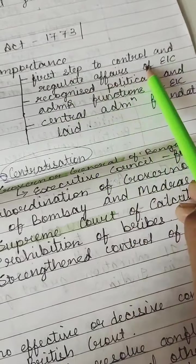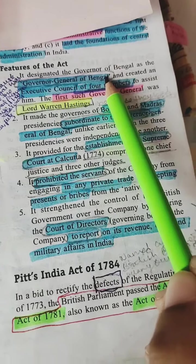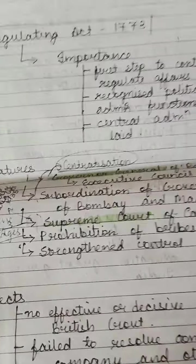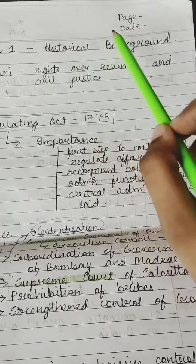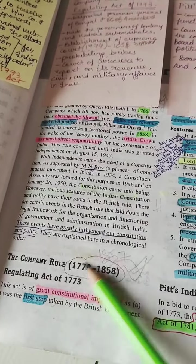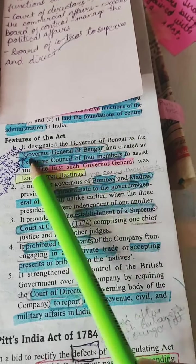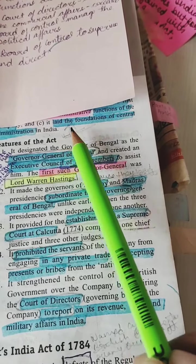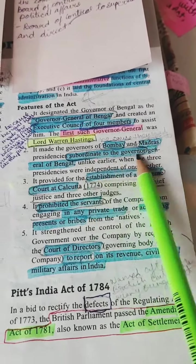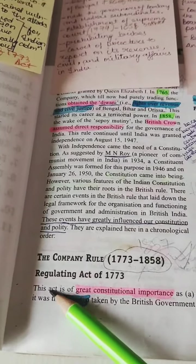So why is the Regulating Act important? It was the first step to control and regulate affairs, recognized political and administrative functions, and laid the foundation of central administration. Features: the Governor General of Bengal was introduced — the first being Lord Warren Hastings. It created an Executive Council of four members, and made the Governors of Bombay and Madras subordinate to the Governor General of Bengal, bringing centralization. Is centralization still there in our country? Yes — it comes from the Regulating Act of 1773.